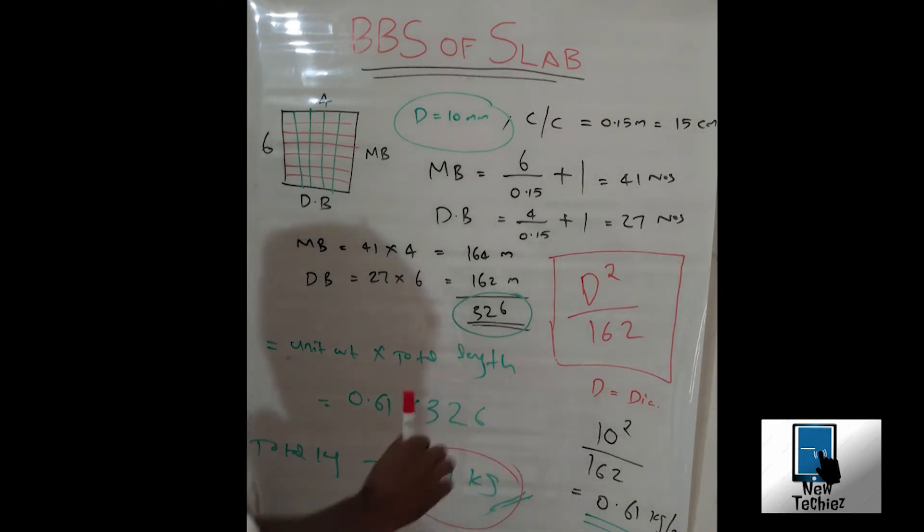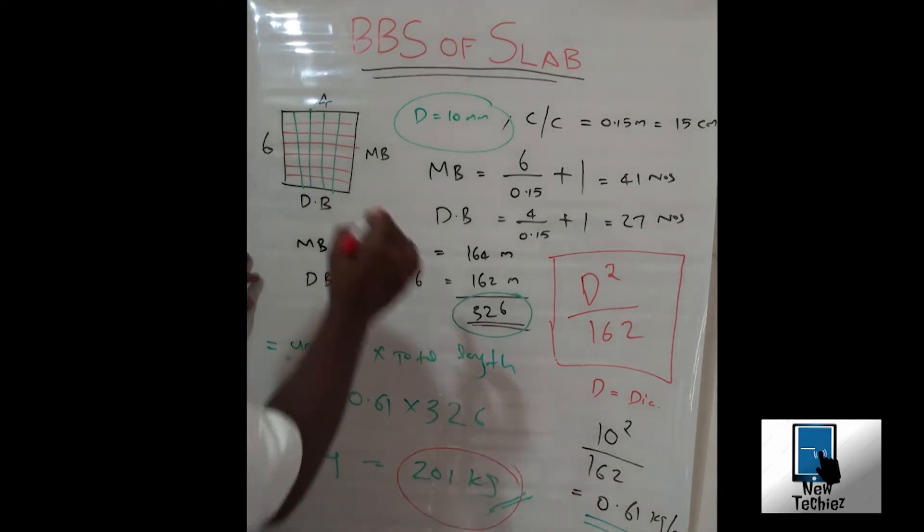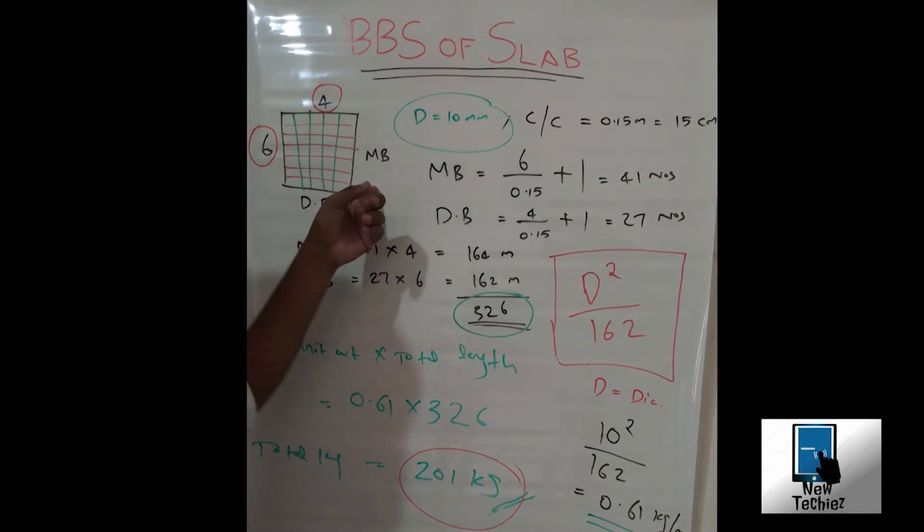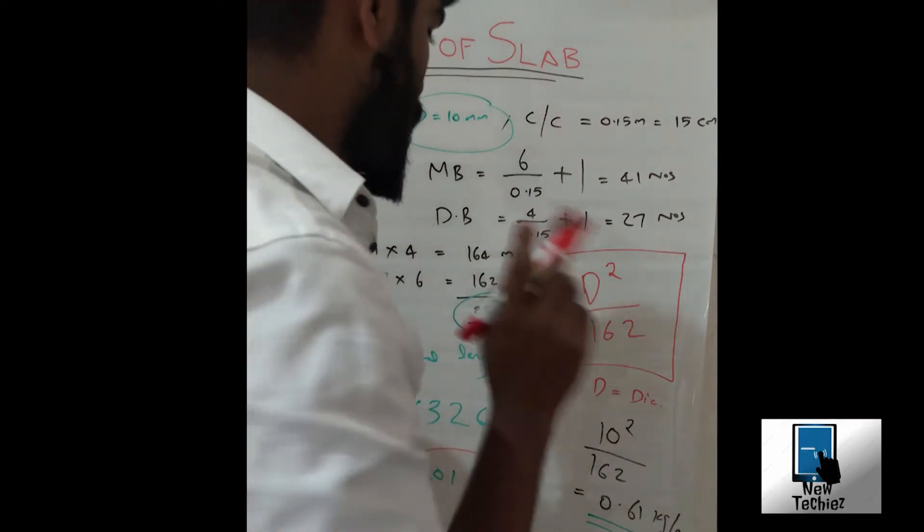This is the amount of steel required for a slab of 4 meter wide and 6 meter length, which is without cranking. You should note that it is without cranking.